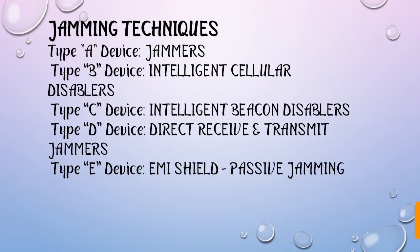These are some jamming techniques: Type A device — Jammers; Type B device — Intelligent Cellular Disablers; Type C device — Intelligent Beacon Disablers; Type D device — Direct Receive and Transmit Jammers; Type E device — EMI Sealed Passive Jamming, where EMI stands for Electromagnetic Interference.